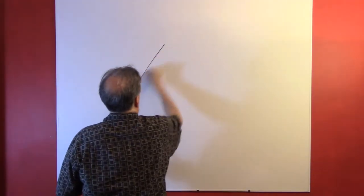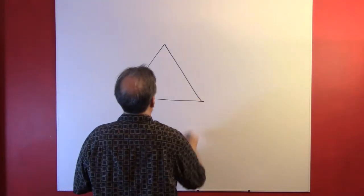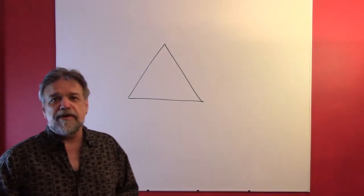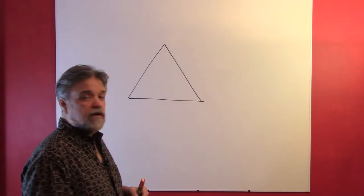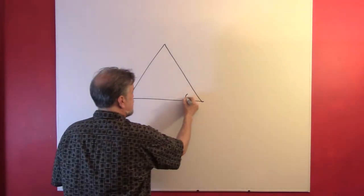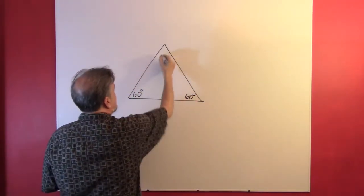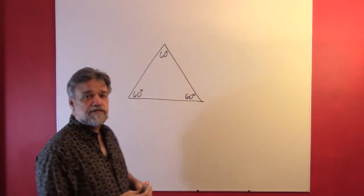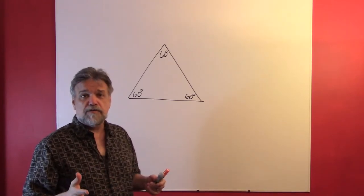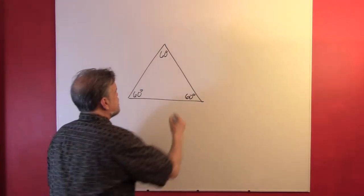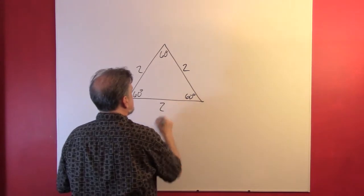So let's start with an equilateral triangle. What do we know about an equilateral triangle? Well, all the angles are congruent, and since they have to add up to 180, that means each of these angles is 60 degrees. And all of the sides are congruent as well — they have the same length. So let's say that they're all two units long.